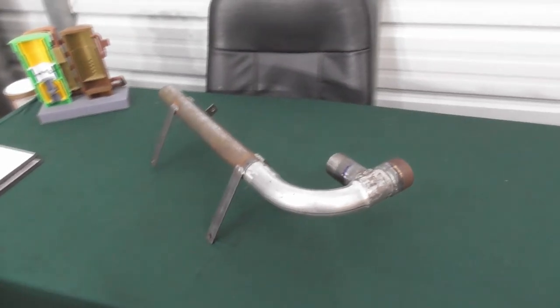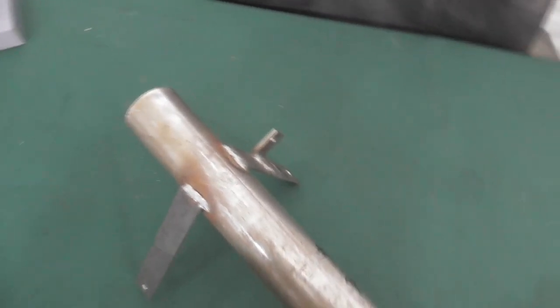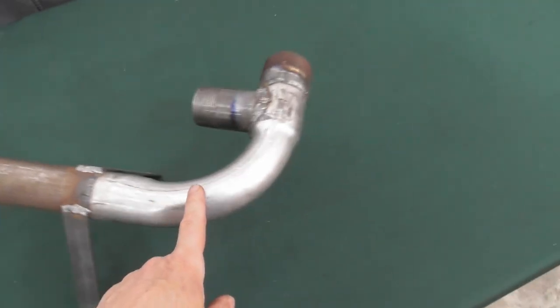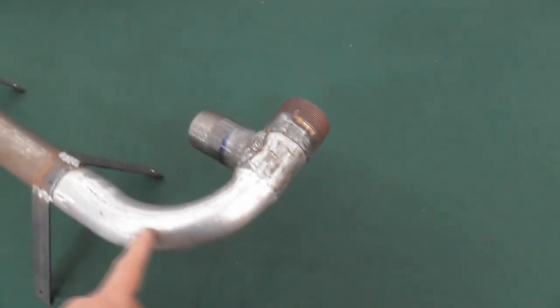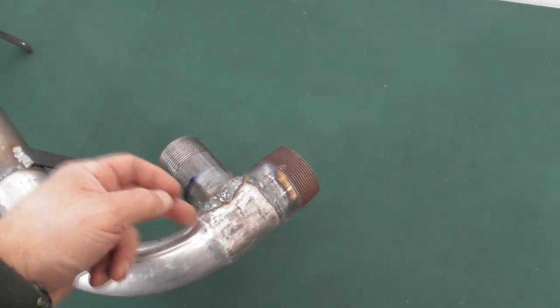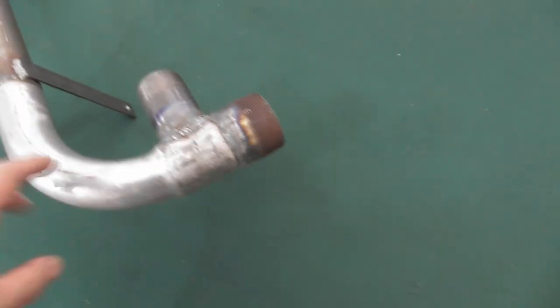All right, we're back. So here we've got a gas exit assembly that's all welded up. So you can see here we've got our 16 inch length of tube butt welded to the 90 degree 5 inch radius. Here we've got the one and a half inch nipple cut in and welded.